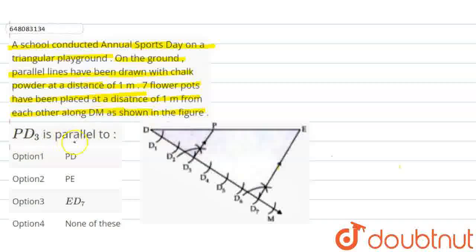This line here. PD3 is parallel. PD3 you find it. It will be parallel. So, D3 is the point that you have here. Here you have this P. Look at the diagram. I will also show you clearly here. Okay?